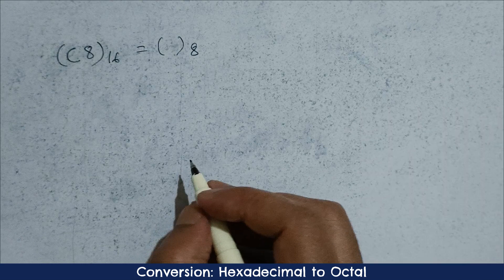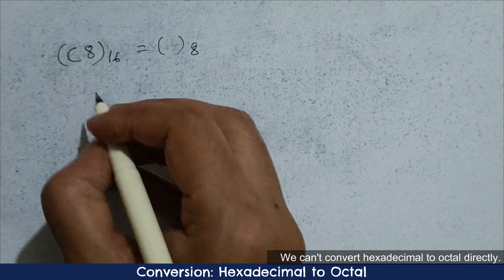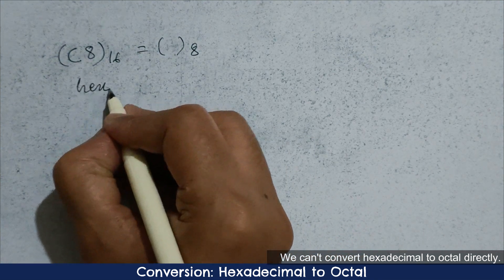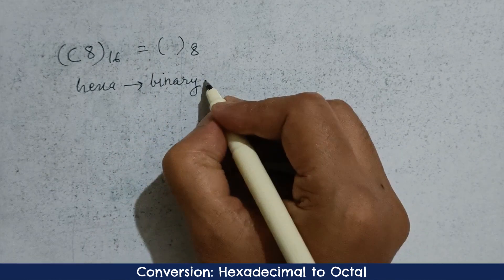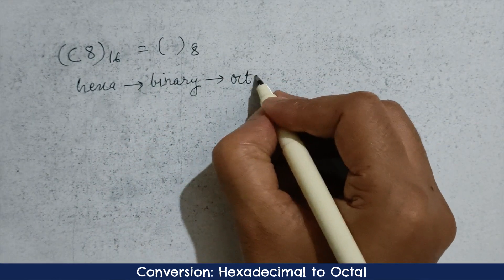So here you can see the question. Hence, we cannot convert the hexadecimal number directly into octal number. First, we need to convert hexadecimal to binary number. Then secondly, we need to convert the binary to octal number.